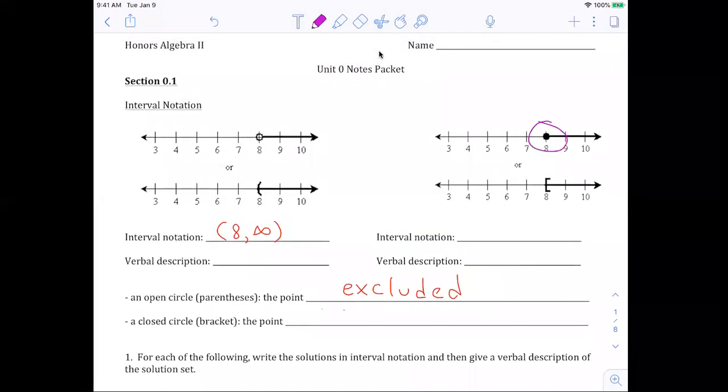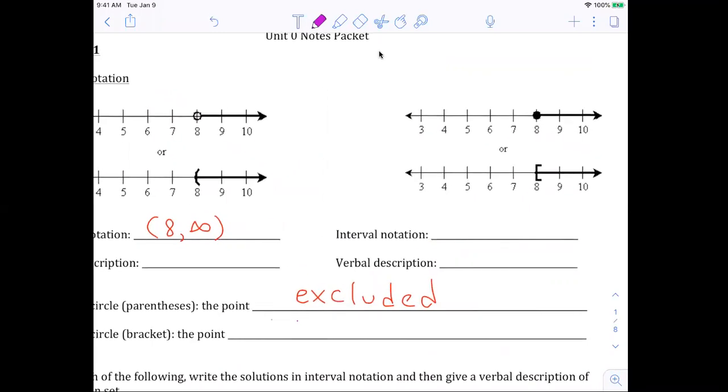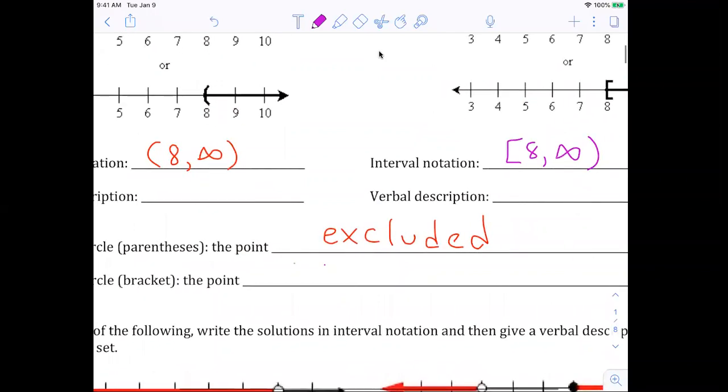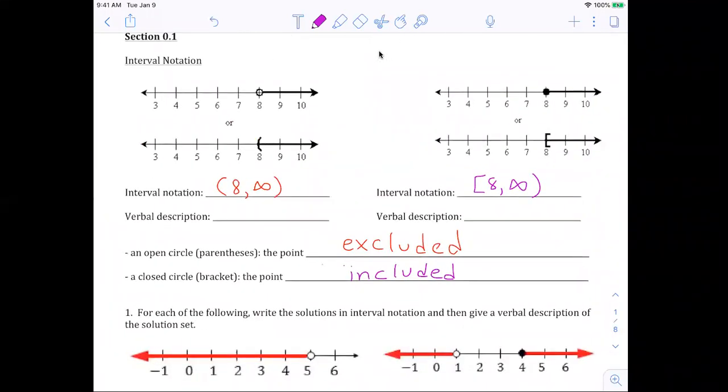Now on the right side, notice it's a really similar problem, but this is a closed circle or a bracket. And so that means that eight is part of our answer and it's included in our solution set. So our interval notation for that instead of a parentheses is going to be bracket eight to infinity parentheses. Now notice in both cases, I use parentheses around infinity because infinity is never inclusive because we can't quite get them. So we always have parentheses around infinity or negative infinity for that matter. But whether we have a bracket or a parentheses depends on whether that value is included or excluded. So the bracket means that it is included.